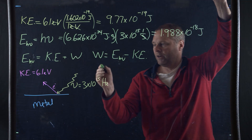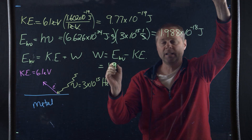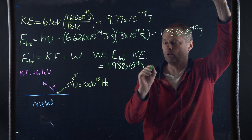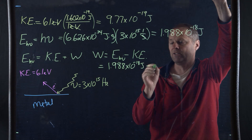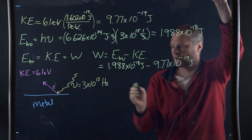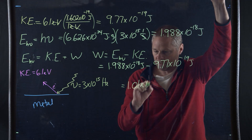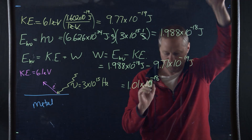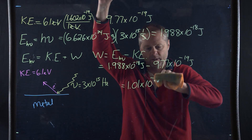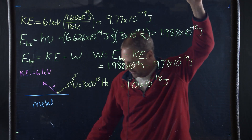We simply plug in our numbers. The energy of the light is 1.988 times 10 to the negative 18th joules, minus the kinetic energy of 9.77 times 10 to the negative 19th joules. We do that calculation and come up with 1.01 times 10 to the negative 18th joules.